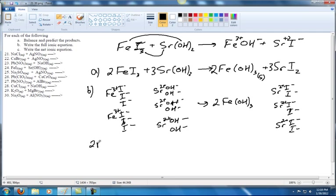what I see is I see two Fe3 pluses. Just counting them up. And then we've got six I negatives. Just counting those up as well. Six I minus. Over here we've got three Sr2 plus. And we've got six OH minuses over here.